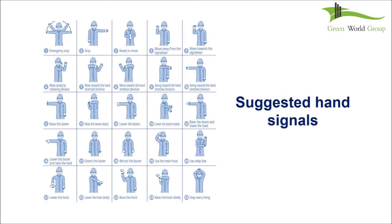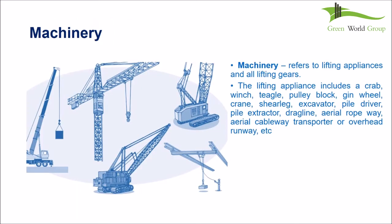During lifting operations, either the slinger or signaller shall communicate with the operator using suggested hand signals. Other communication methods, such as wireless walkie-talkies or telephones, may also be used.